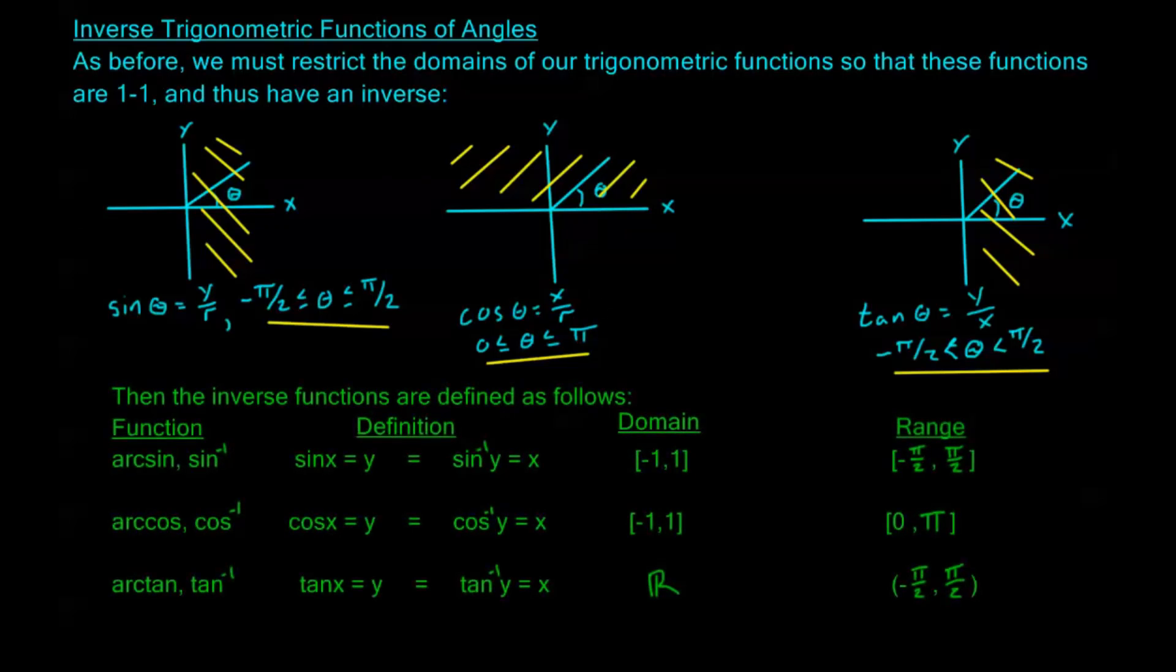Now with these restrictions in place we define the functions in a very similar way that we did before. Now for sine inverse or arcsine if we have sine x equals y we can think of that as an equivalent statement to sine inverse of y equals x. Draw these in here. And sine inverse has a domain of negative 1 to 1 and a range of negative pi over 2 to pi over 2. It's just the opposite of the domain and range of my restricted sine function.